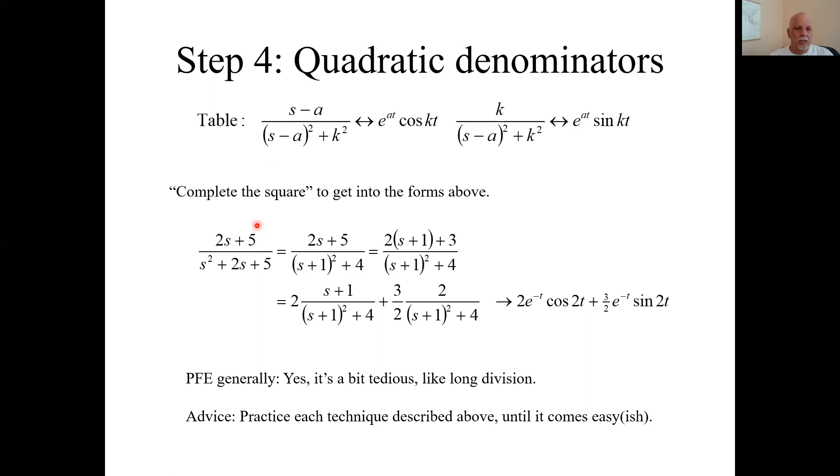Let's say you're given this. Confirm that this can't be factored into real roots. It has complex conjugate roots. I do what I call complete the square.